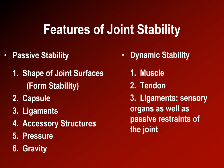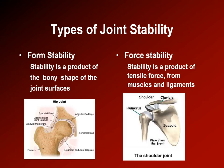The hip depends much upon form stability due to its very deep socket in the acetabulum. However, the shoulder's glenoid socket is very shallow — especially compared to the surface area of the humeral head — so the glenohumeral joint depends much upon the active force of the rotator cuff muscles to keep it stable.